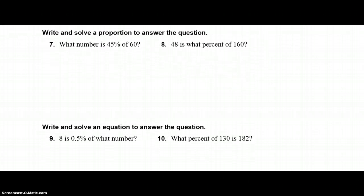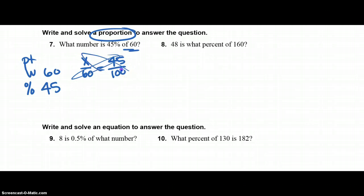Number seven, we are writing and solving a proportion. You cannot solve an equation if it tells you to do proportions, so this is part, whole, percent. What number is 45%, so that's my percent of 60, that's my whole. So I have x over 60 equals 45 over 100. From this point you use cross multiplication, so I have 100x equals 60 times 45, which is 2700. Divide both sides by 100, and x is equal to 27.